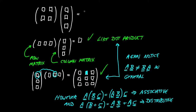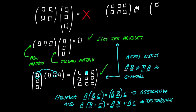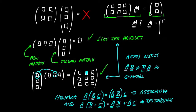Let me put one final puzzle: suppose I have a two-row, three-column matrix, then a mystery matrix M, and then a simple column matrix of two rows. What shape should matrix M be? In fact, M must be a column matrix of three elements. That's the end of this video.